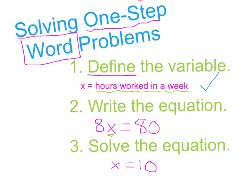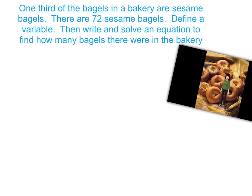So remember the three steps: define a variable, write the equation, and then solve it. Now here's the first problem: one-third of the bagels in a bakery are sesame bagels, and there are 72 sesame bagels. Define a variable, then write and solve an equation to find how many bagels there were in the entire bakery.